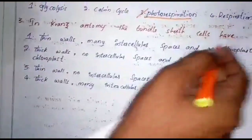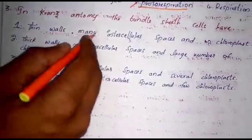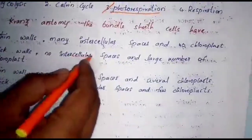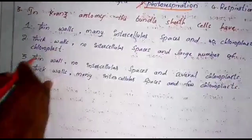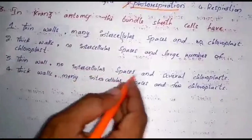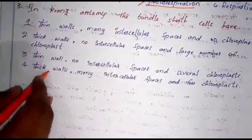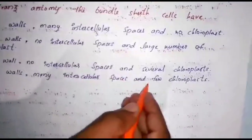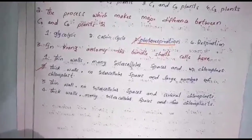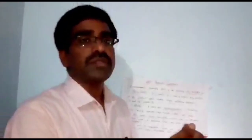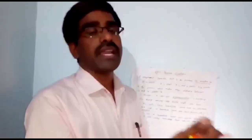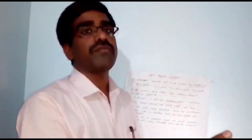In Kranz anatomy, the bundle sheath cells have: option one — thin walls, many intercellular spaces and no chloroplasts; option two — thick walls, no intercellular space and large number of chloroplasts; option three — thin walls, no intercellular space and several chloroplasts; option four — thick walls, many intercellular spaces and few chloroplasts. The answer is option two: thick walls, no intercellular space, and large number of chloroplasts. Today we discussed C3 pathway and C4 pathway; in the next classes we will understand CAM plants as well as factors affecting the rate of photosynthesis.